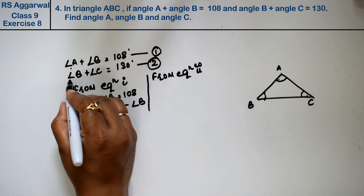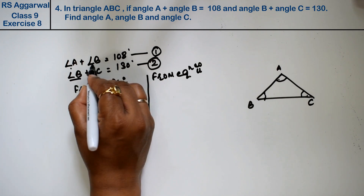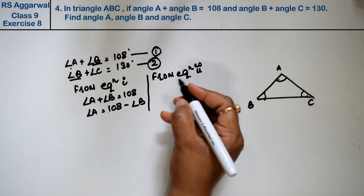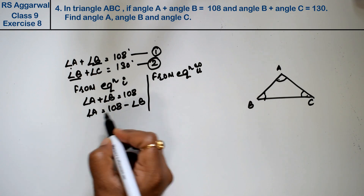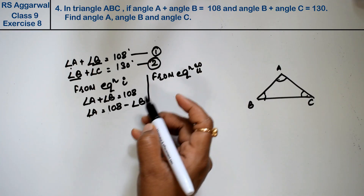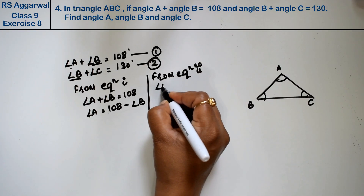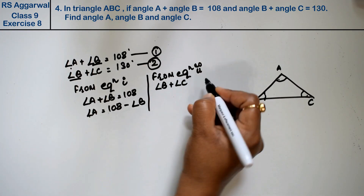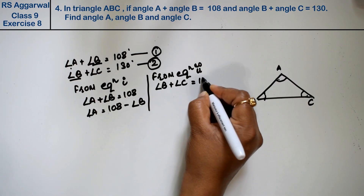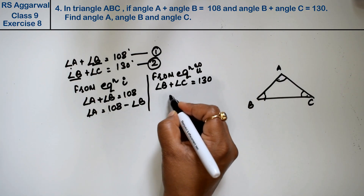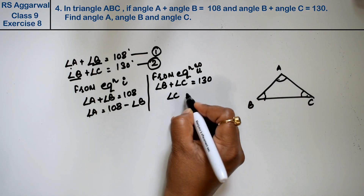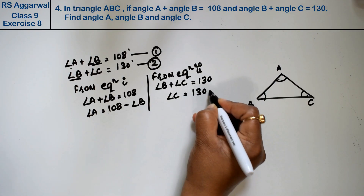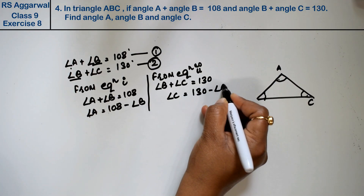From the second equation, angle B plus angle C equals 130 degrees. So angle C equals 130 minus angle B.